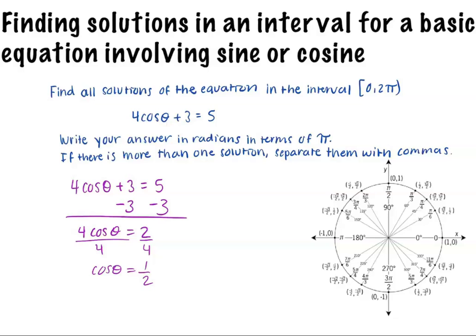Both these angles, π over 3 and 5π over 3, are within our interval from 0 to 2π, which is one rotation around the unit circle. Therefore, θ equals π over 3 and 5π over 3.